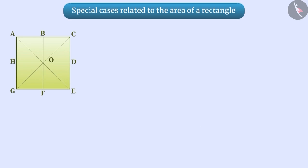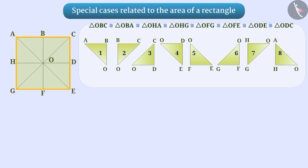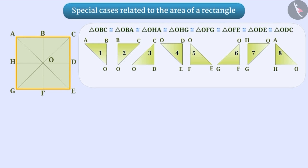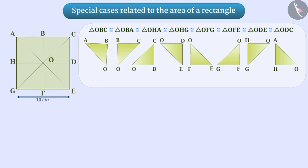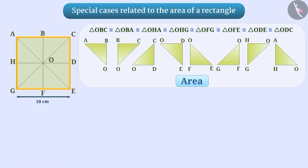Now look at the square given here. The square ACEG is divided into eight congruent parts. If the length of the side of the square is 10 cm, the square of side 10 cm is divided into eight equal parts.